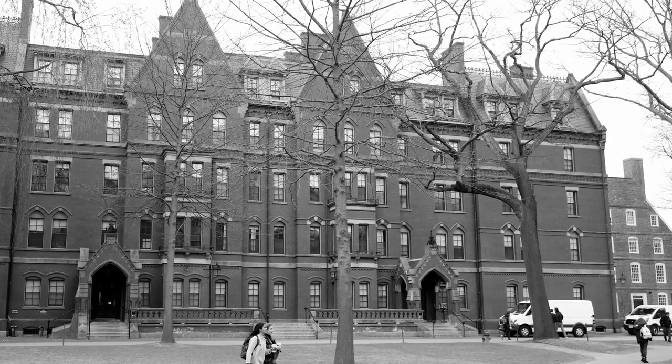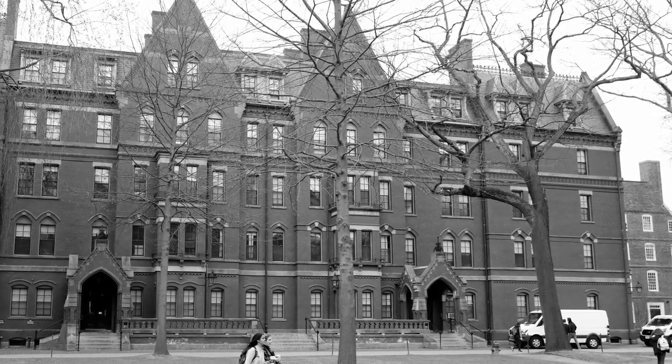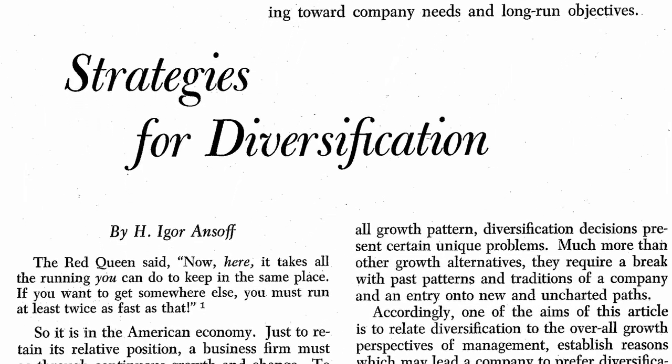The Ansoff matrix was first published by mathematician Igor Ansoff in the Harvard Business Review in 1957 in an article titled Strategies for Diversification. It's a simple model for looking at two main areas of activity: products and markets.